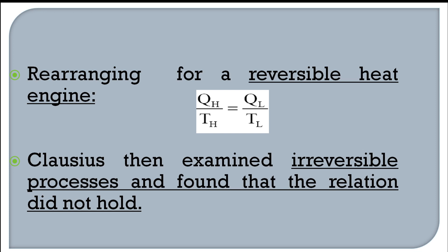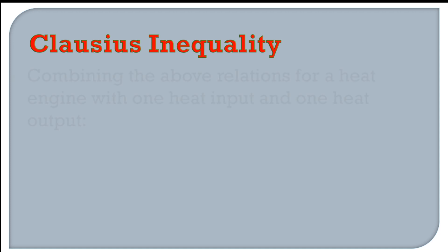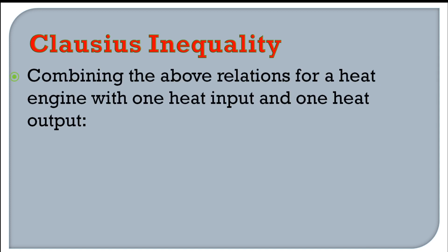Clausius then examined irreversible processes. He found that the equality Q/T is not always valid. For an irreversible process, QH/TH is less than QL/TL, thereby establishing an inequality known as the Clausius inequality.